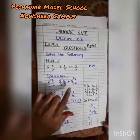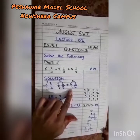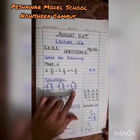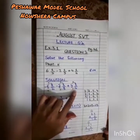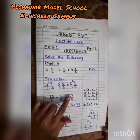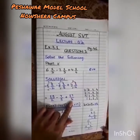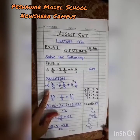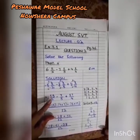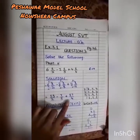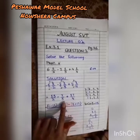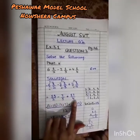Denominator as it is. Then the next mixed fraction is 4 whole 1/4: denominator multiplied by whole number — four fours are sixteen — sixteen plus one gives 17, denominator as it is. So from mixed fractions we have made improper fractions: 13/2 minus 7/3 plus 17/4.